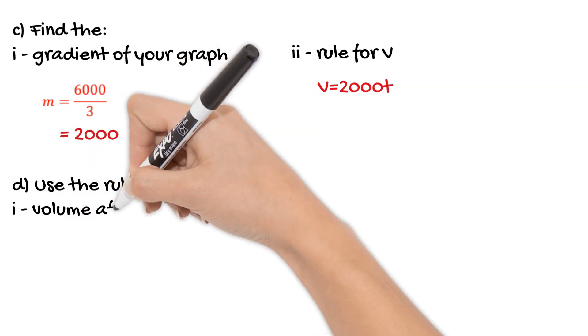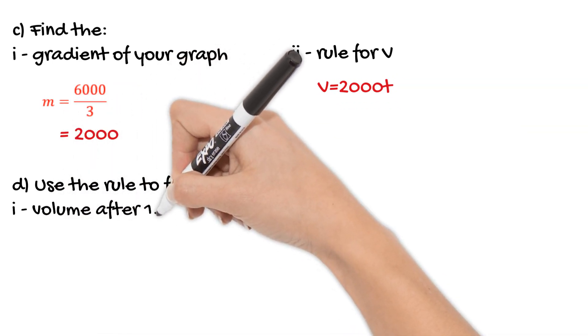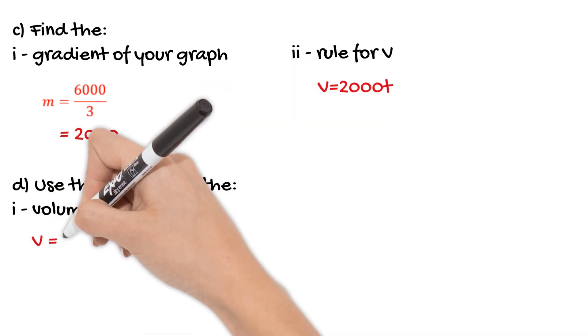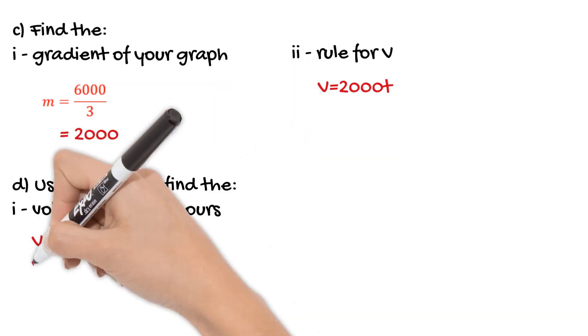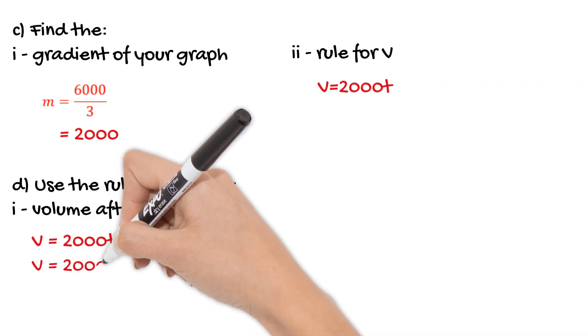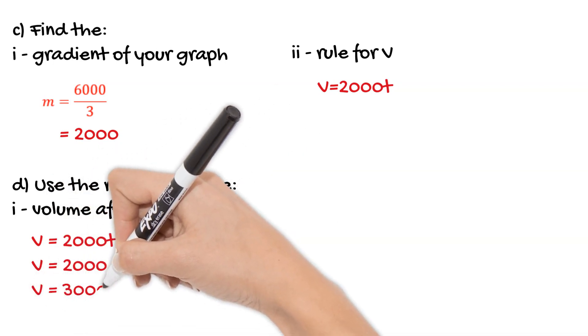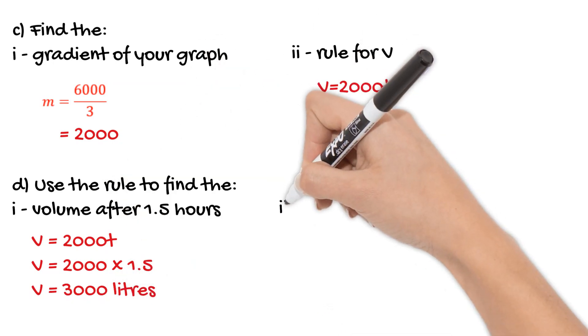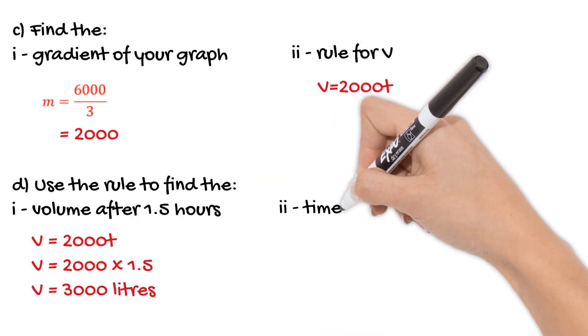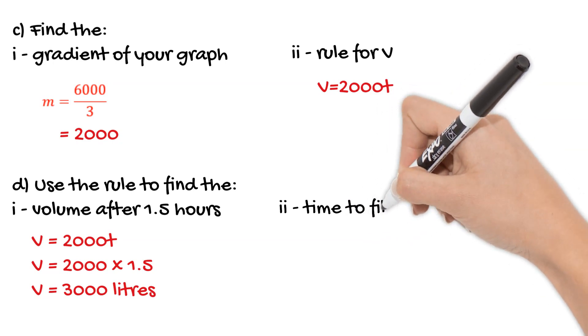So then for part d we're being asked to use the rule to find the volume after 1.5 hours. Now this is just a matter of substituting the values that we've found, or sorry, the values that we're given into our rule. So we know V equals 2,000t. We're asked to find the volume when t is 1.5. So 2,000 times 1.5 gives us 3,000 litres.